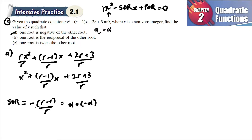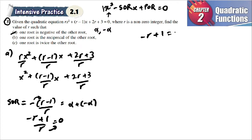Setting −(r−1)/r equal to zero: expanding gives −r + 1 = 0, so r = 1. Therefore, without even using the product of roots, we already find the value of r, which is 1.